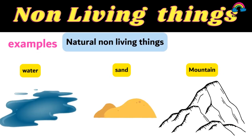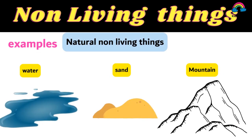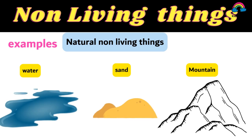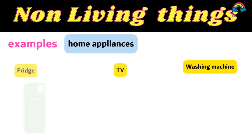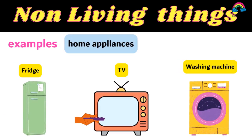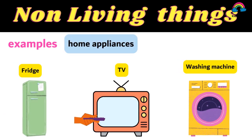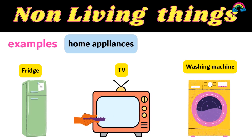Natural non-living things include water, sand, and mountains. Home appliances like fridges, TVs, and washing machines are also non-living things.